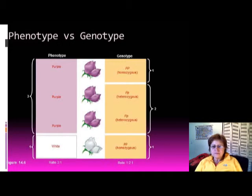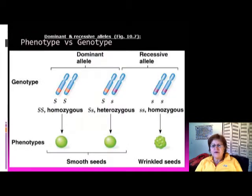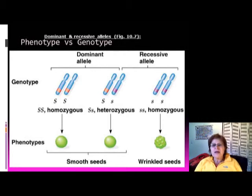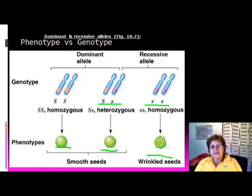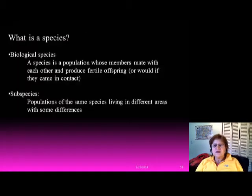Another example of phenotype versus genotype: the capital S allele produces smooth seeds on peas. Two dominant alleles together produce smooth seeds, and even one dominant with one recessive produces smooth seeds due to dominance. The only way to get wrinkled seeds is to have two recessive alleles together.